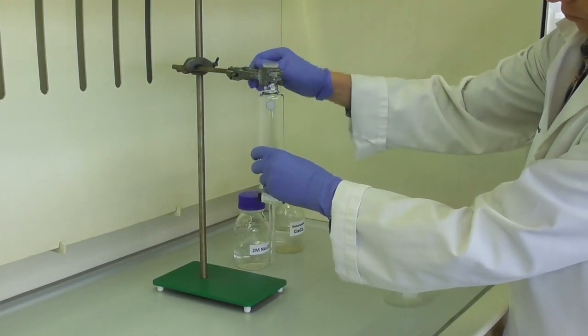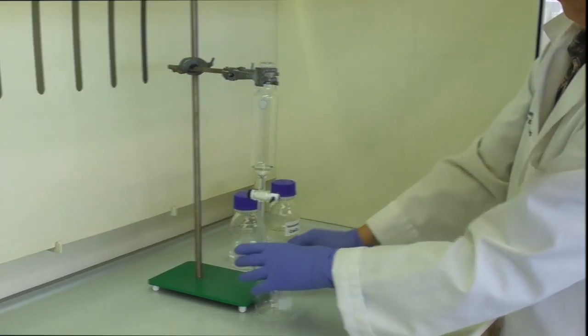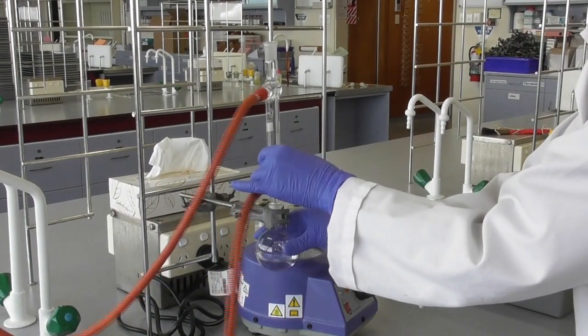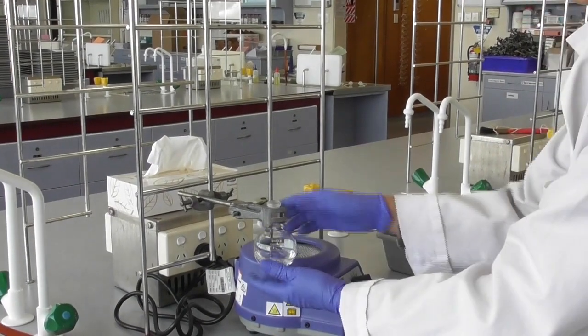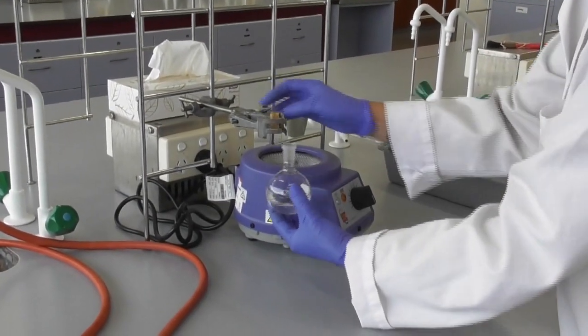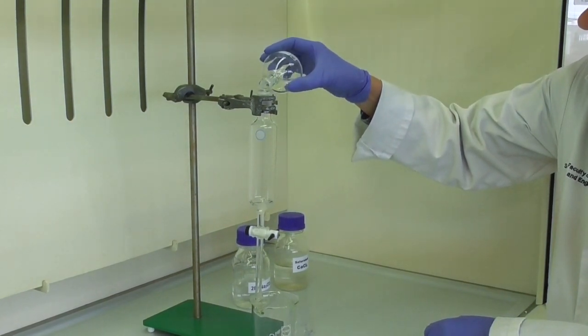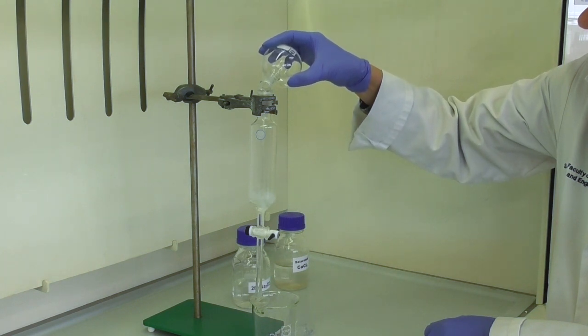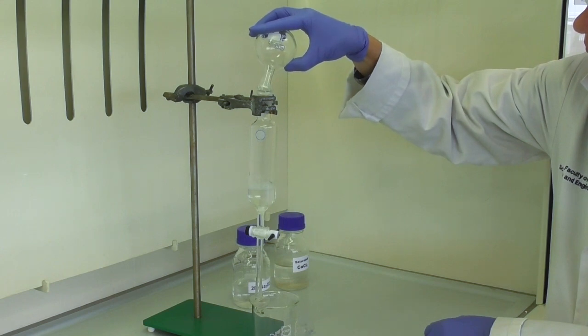In the meantime, we set up a separating funnel in the fume hood. Once the solution has cooled off, we remove the condenser from the flask and take the flask to the fume hood where we pour the solution into our separating funnel. It's a good idea to have a beaker underneath just in case there is leakage or spillage.